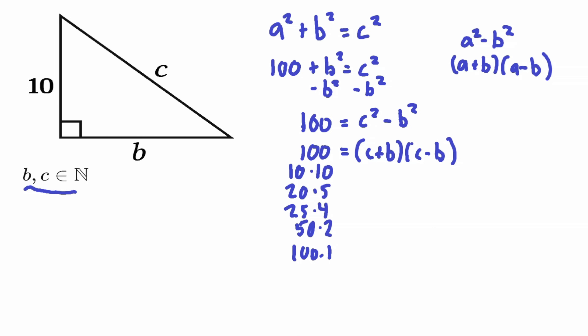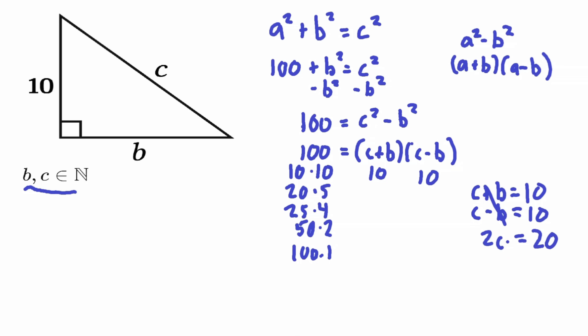Let's start with 10 × 10. If c + b = 10 and c − b = 10, we add the equations to get 2c = 20, so c = 10. However, on a right triangle the hypotenuse must be the longest side. Since our a is also 10, c cannot equal a, so we cross this out — it's not correct.